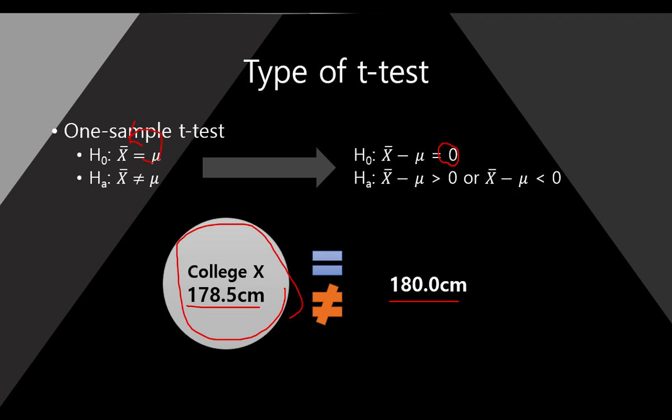Here, the reason I use the mu is usually we want to know, from the national investigation, the average of all male college students' height is 180. So we want to know if this college male student's height is the same as this number.